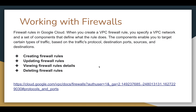Hi friends, hope you are doing great. Today we are going to see the demo working with firewalls. Firewall rules in Google Cloud — when we create a VPC firewall rule, we specify a VPC network and a set of components that define what the rule does. These components enable us to target certain types of traffic based on the traffic's protocol, destination ports, sources and destinations. In this demo, we are going to create firewall rules, update firewall rules, view the firewall rule details, and finally delete the firewall rules. A reference document is provided — let's go to the demo.